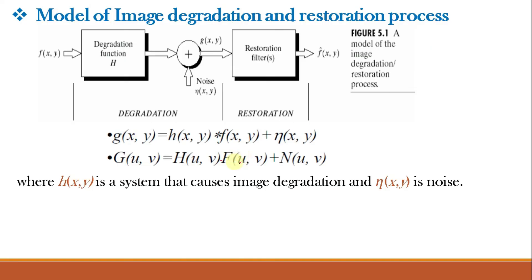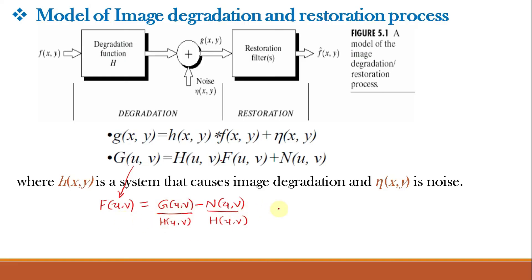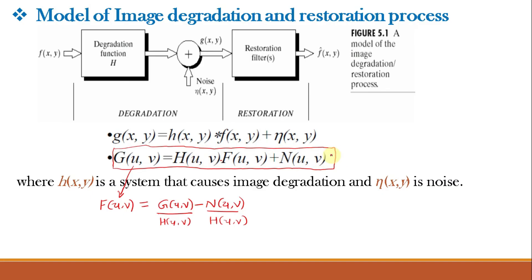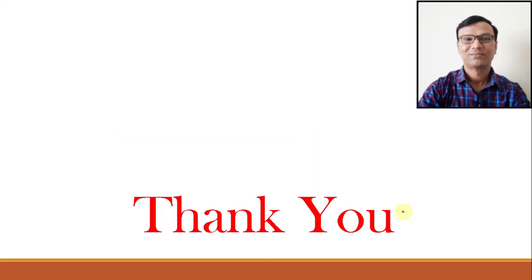From this frequency domain equation, F(u,v) can be obtained, meaning we can recover the original image f(x,y) by applying the inverse process in restoration. If H is the identity operator (equal to 1), we deal only with degradation due to noise. If noise is identity (equal to 1), we deal only with degradation due to H. Many times both H(u,v) and N(u,v) are present and restoration must be applied accordingly. That concludes this video class.